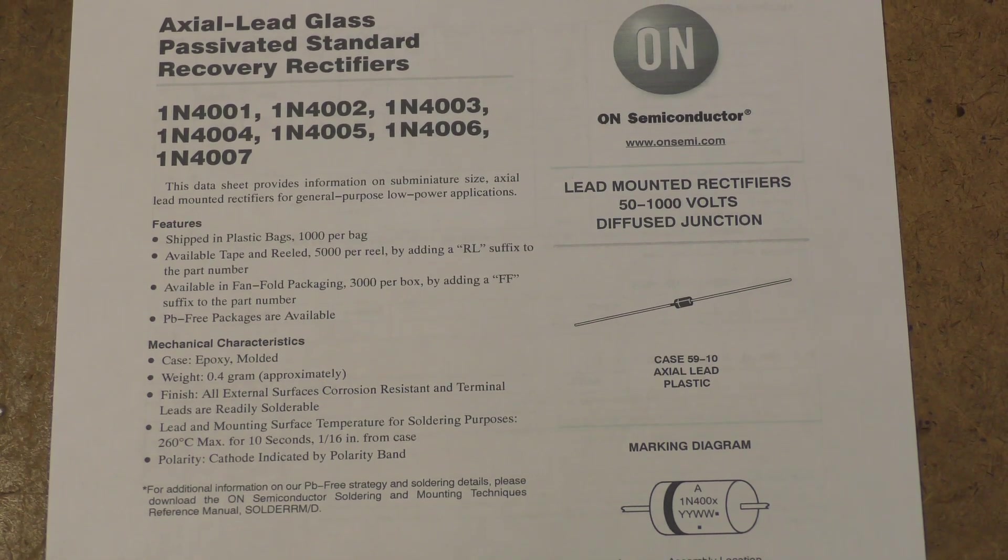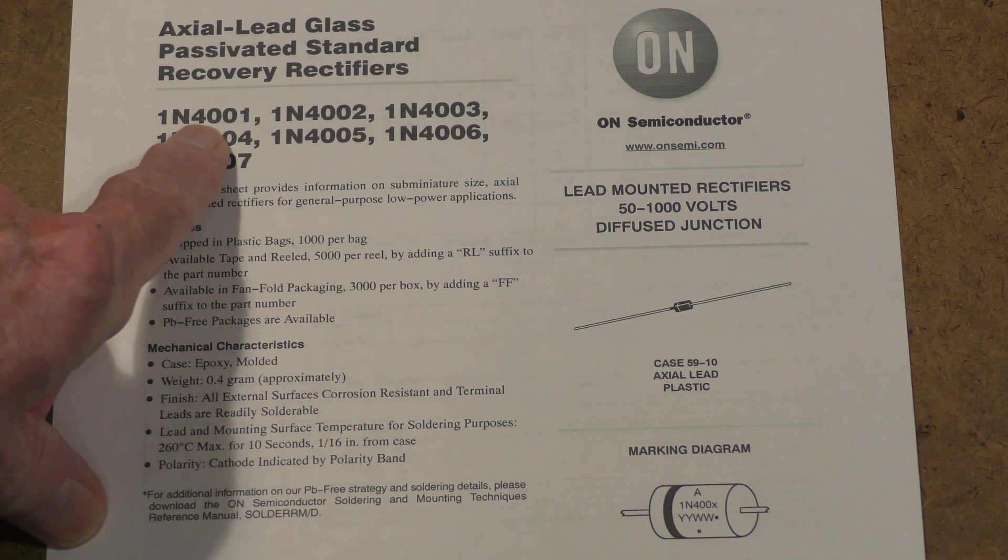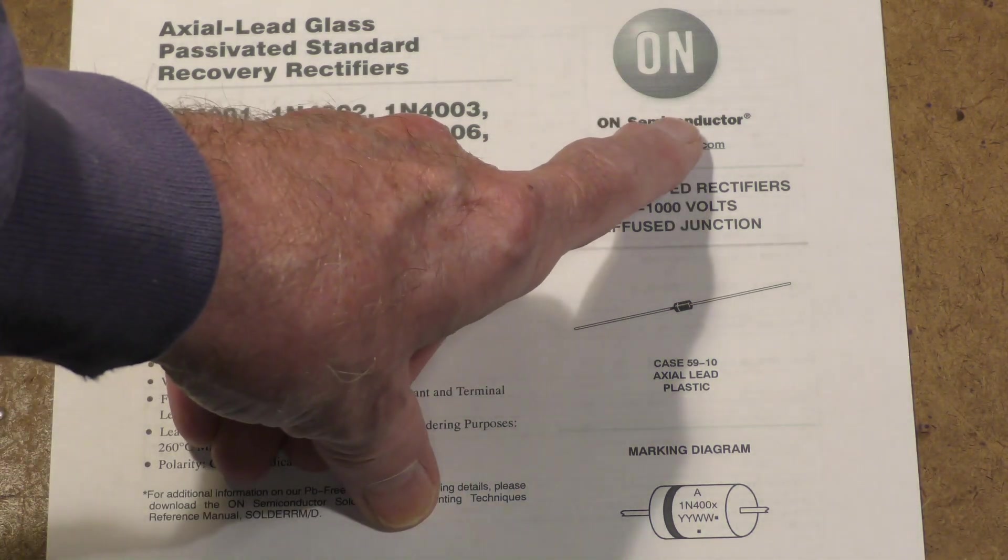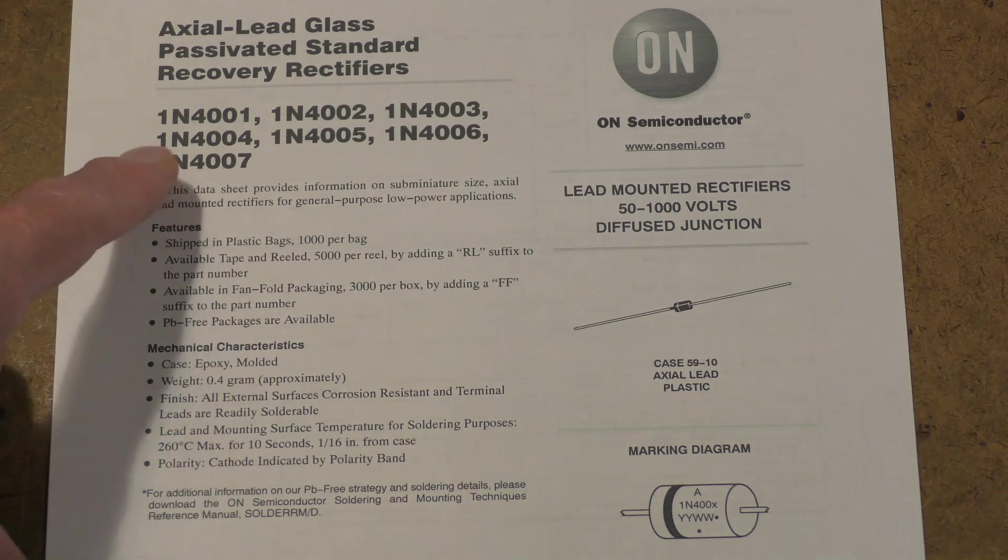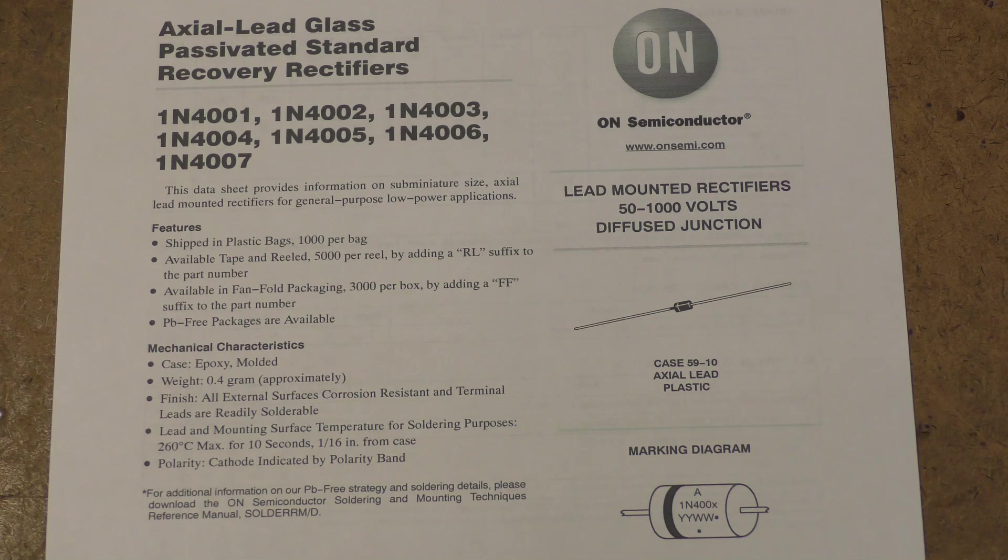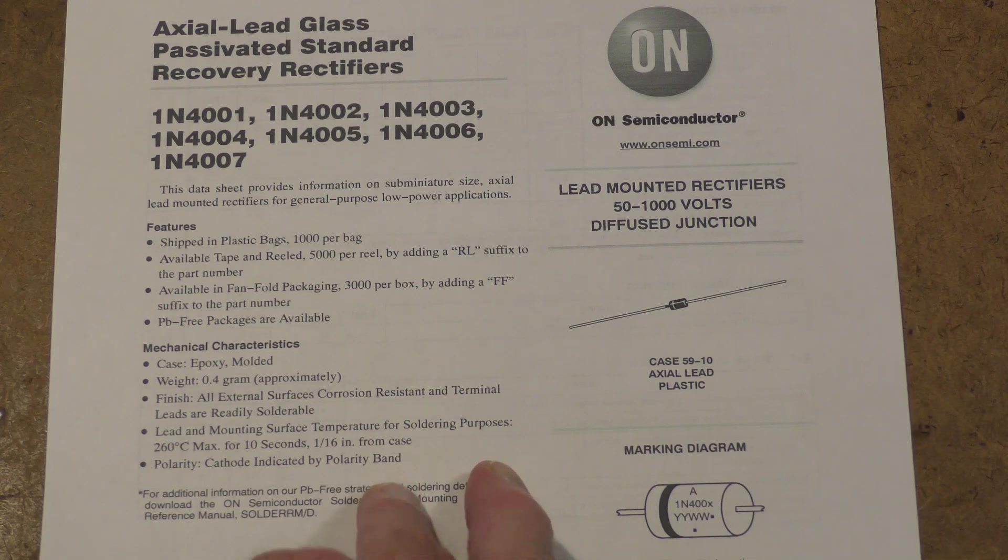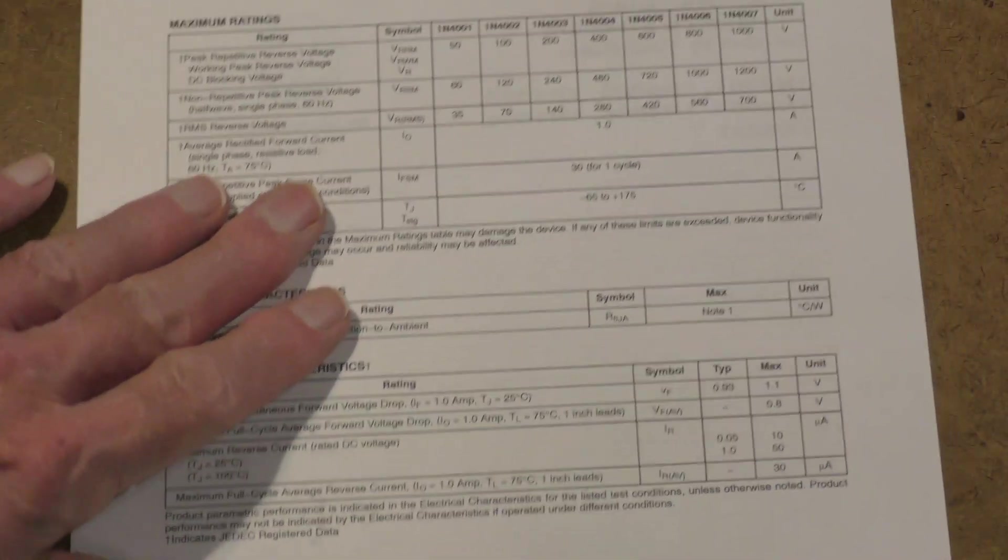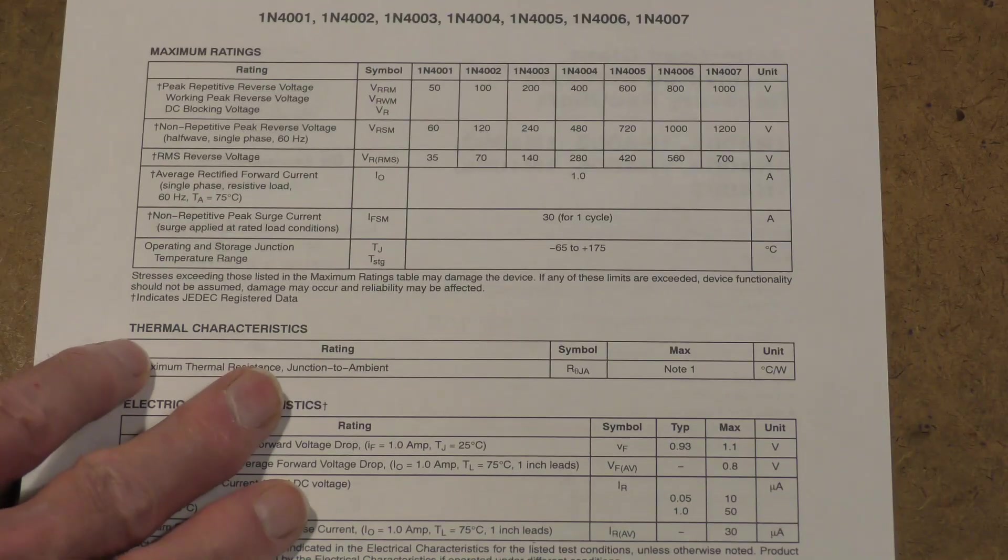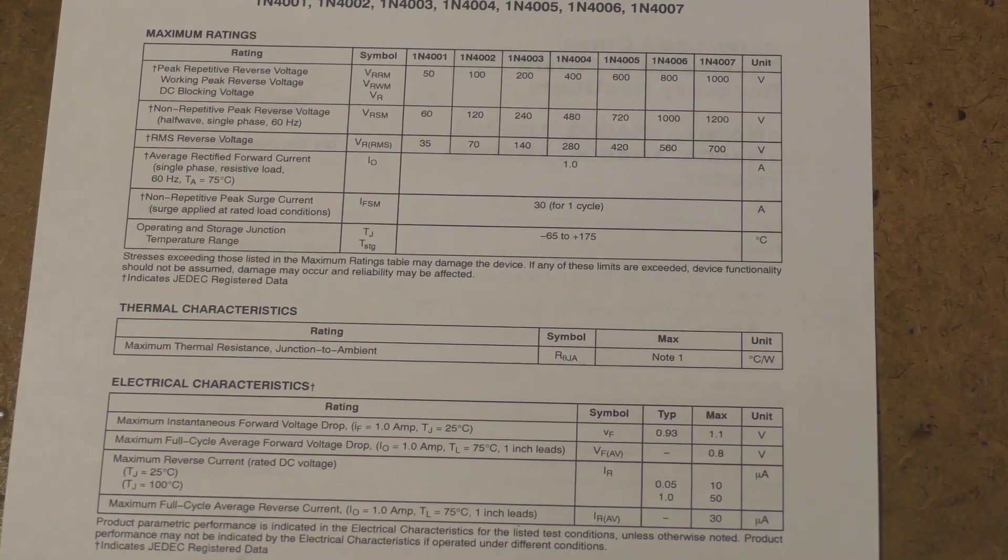The diode that I'm using, that string of diodes, they are all 1N4001s. This is a data sheet from ON Semiconductor for the whole line of 4000 series. They run from 4001 to 4007, and the major difference between them is in the peak inverse voltage.